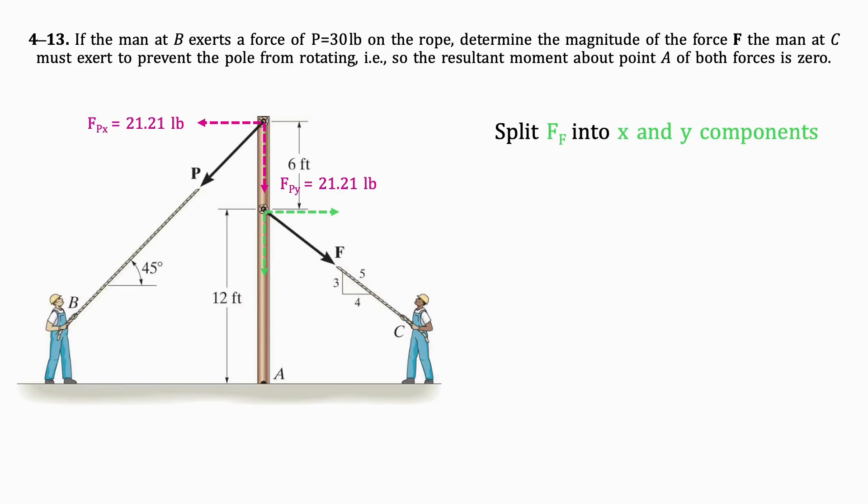Then, we split Ff into X and Y components using the given angle. By doing this, we get Ffy equals F times 3 over 5 pounds and Ffx equals F times 4 over 5 pounds.